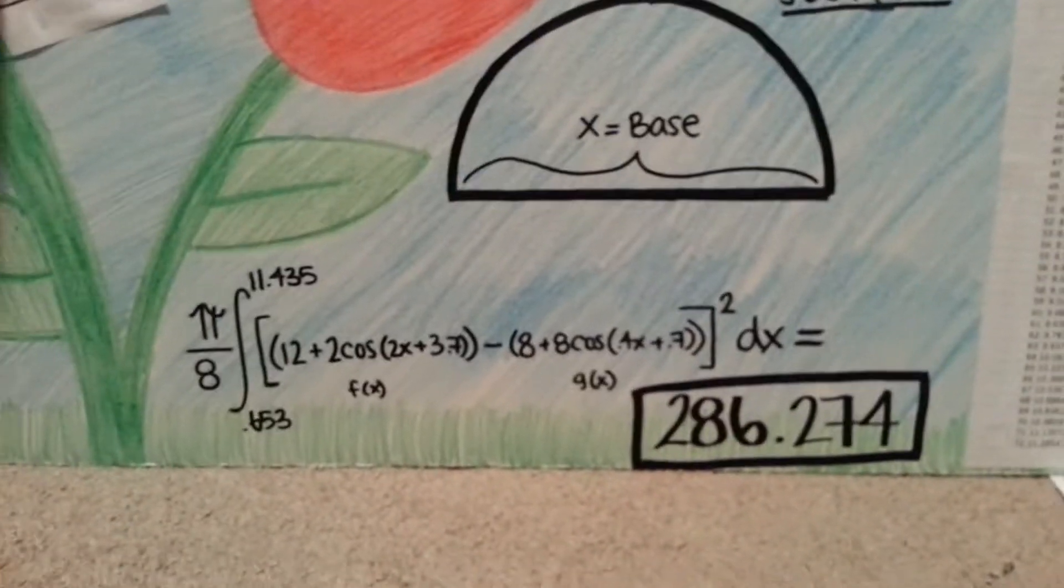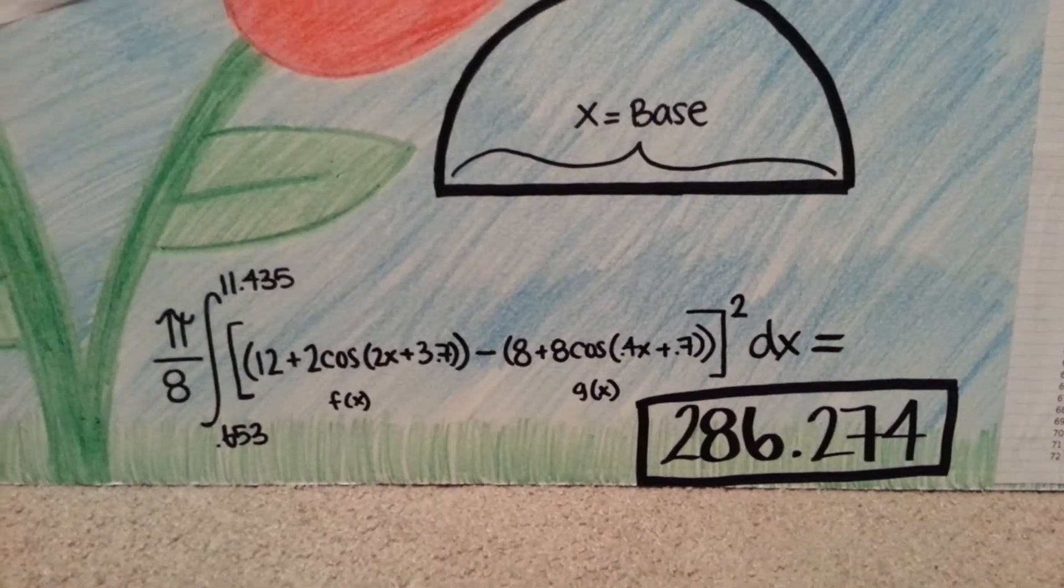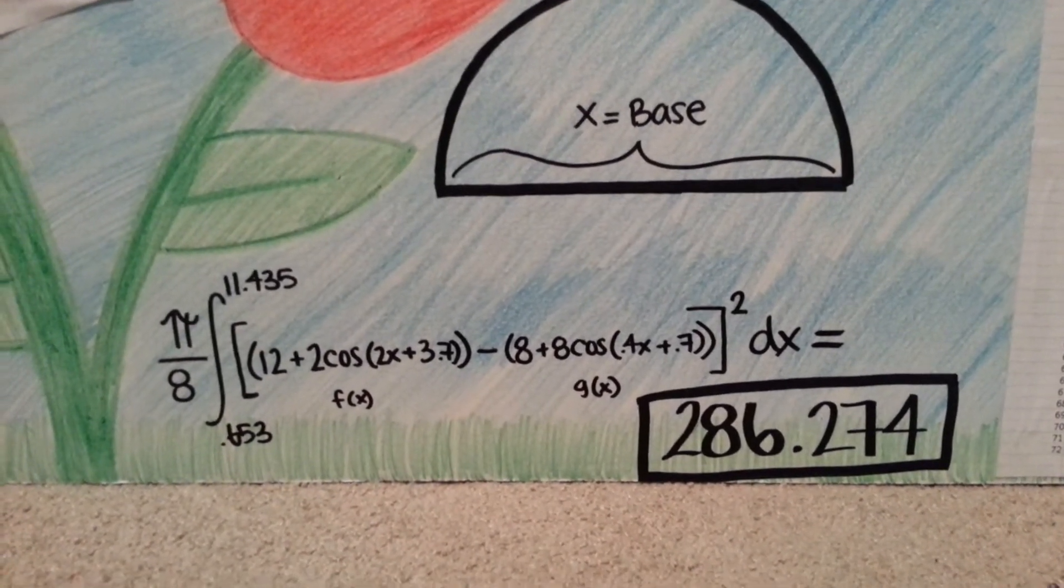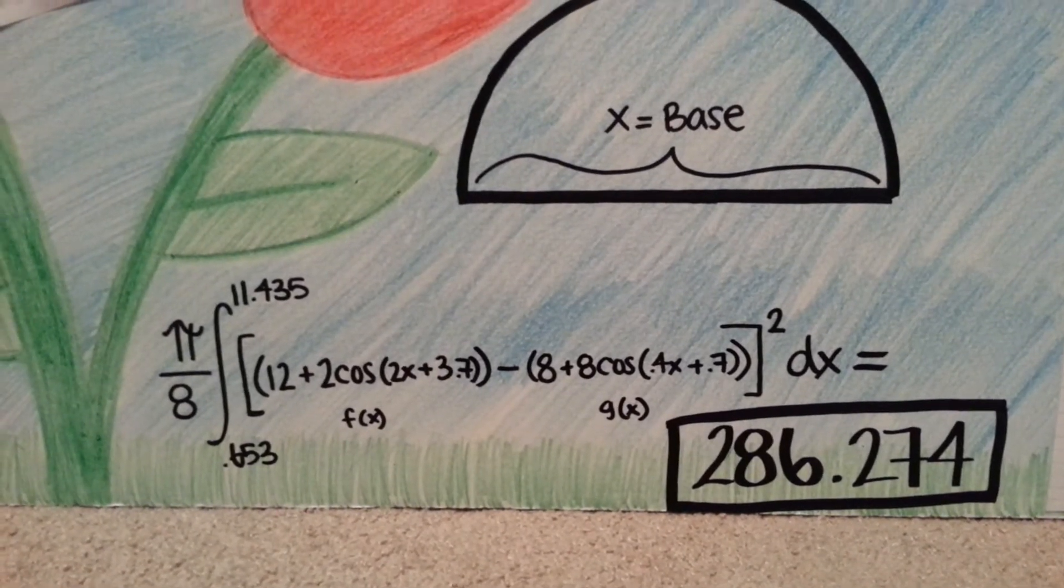When I actually put my interval together, I took f of x minus g of x and squared it, and I integrated that with respect to x from the interval from .653 to 11.435.